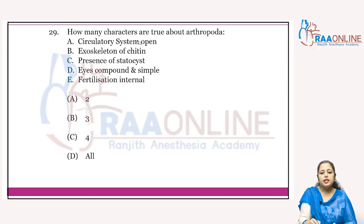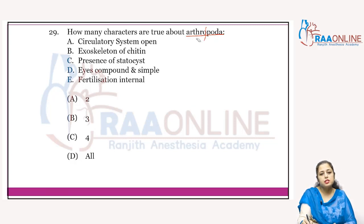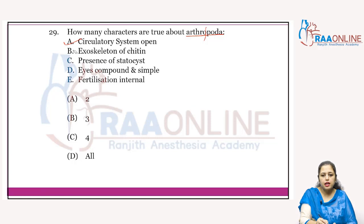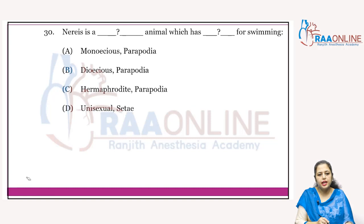How many characters are true about Arthropoda? Arthropoda means jointed legs. It is the largest phylum due to the largest class Insecta. Circulatory system is open — yes. Exoskeleton of chitin — yes, made of glucosamine. Presence of statocyst — yes. Eyes are compound and simple — yes. Fertilization is internal — yes. All statements are correct — answer is D.